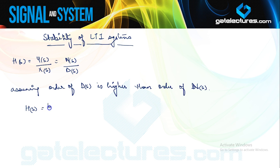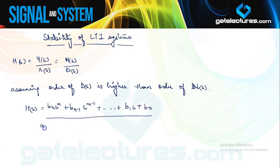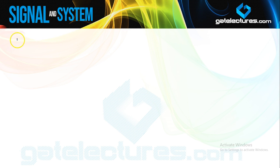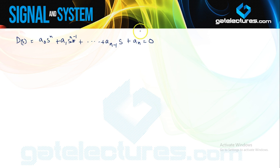So now I can express H(S) as BN·S^M + BN-1·S^(M-1) + ... + B1·S + B0, upon A0·S^N + A1·S^(N-1) + ... This denominator polynomial D(S) which is A0·S^N + A1·S^(N-1) + ... + A(N-1)·S + AN, is known as the characteristic equation.